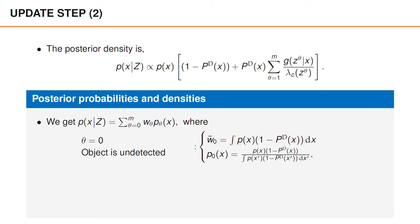We also learned in that video that the density is obtained by normalizing the original function. And p_0(x) is therefore p(x) times (1 - P^D(x)) divided by the integral of the same product.